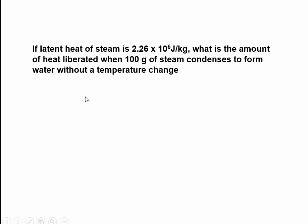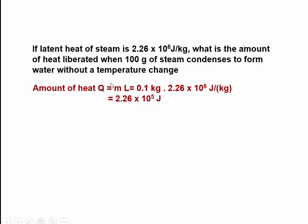Let's check the second question. The latent heat of steam is 2.26 times 10 to the 6 joules per kilogram. What is the amount of heat liberated when 100 grams of steam condenses to form water? When a gas condenses to form water, heat is liberated. When a liquid becomes vapor, the latent heat is absorbed. The amount of heat liberated is mass multiplied by latent heat.